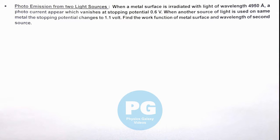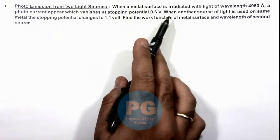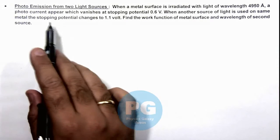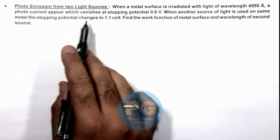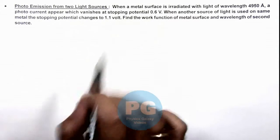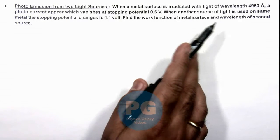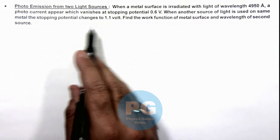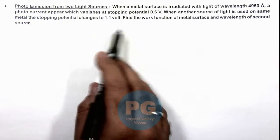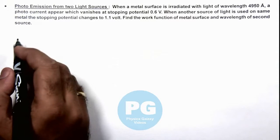In this illustration, we'll analyze the photo emission from two light sources. When a metal surface is irradiated with light of wavelength 4950 angstrom, a photo current appears which vanishes at stopping potential 0.6 volt, which is stopping the fastest electron in the photoelectric effect. When another source of light is used on the same metal, the stopping potential changes to 1.1 volt, meaning the energy of the second light source is higher. We are required to find the work function of the metal surface and wavelength of the second source.